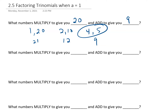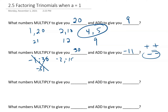What numbers multiply to give you 30 and add to give you negative 11? If two numbers multiply to give you a positive, you know they're either both positive or both negative. Since this factor pair adds to give us a negative, they must both be negative. So we think of the factors of 30: negative 1 and negative 30 adds to negative 31; negative 2 and negative 15 adds to negative 17; negative 3 and negative 10 — nope. What about negative 5 and negative 6? That's the pair that adds to give you negative 11.